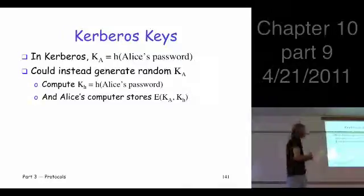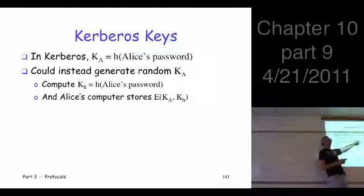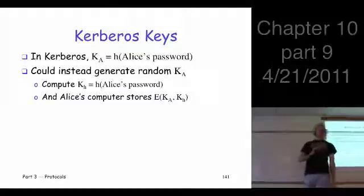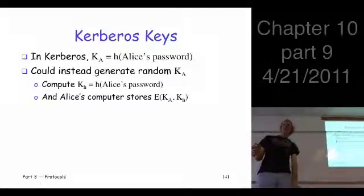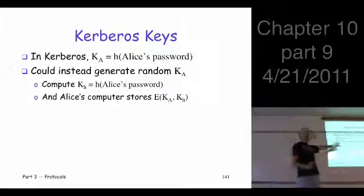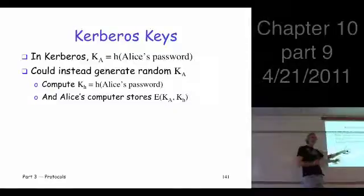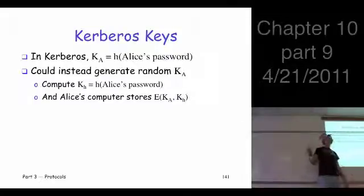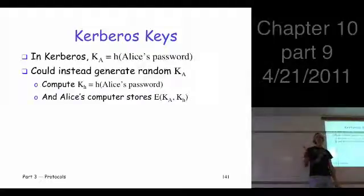Here's what you could do. You could use Alice's password, hash that to get a key, and use that to encrypt the actual key that Alice and the KDC share. Now what happens if you're using this approach? What happens when Alice logs in? She still just types in her password, and then behind the scenes, the password gets hashed, and then that key is used to decrypt the actual key, and now you're good to go. So it's like one extra step, and it's minor, insignificant amount of additional work.